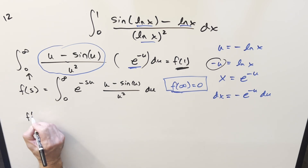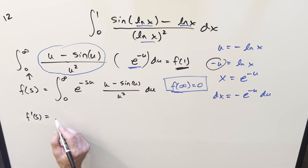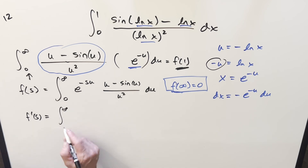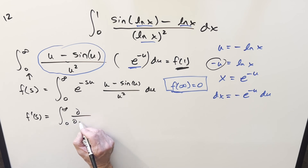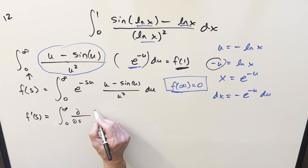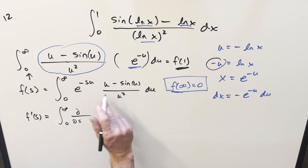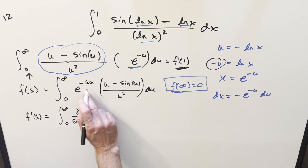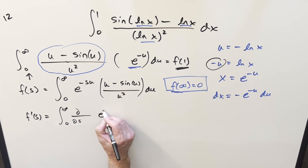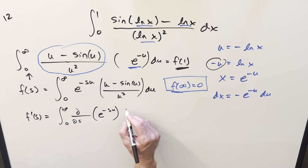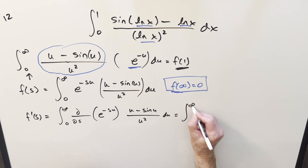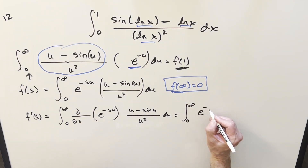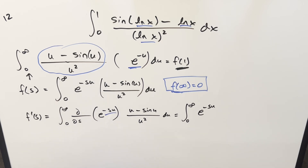Let's differentiate with respect to s using Feynman's trick — differentiating as a partial inside the integral sign. The stuff involving u and sine u is constant with respect to s, so we only differentiate e^(-su). That derivative brings down a factor of -u via the chain rule. We can then cancel one factor of u with the u in the numerator and flip the minus sign.